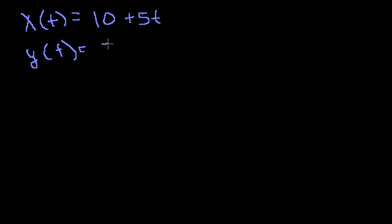In the last video, we used a set of parametric equations to describe the position of a car as it fell off of a cliff. And the equations were x as a function of t was equal to 10 plus 5t.